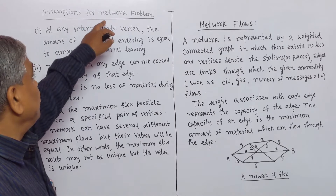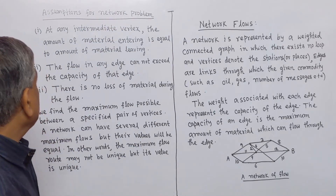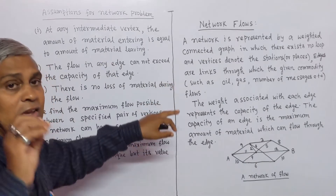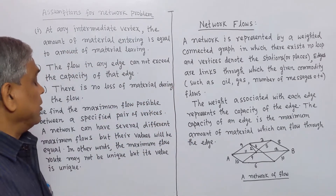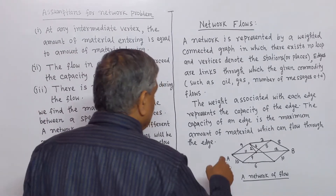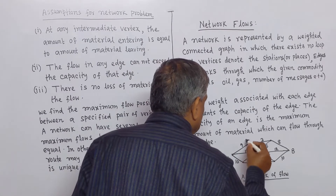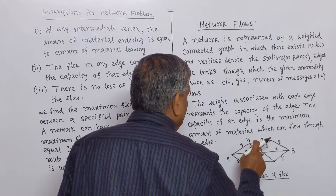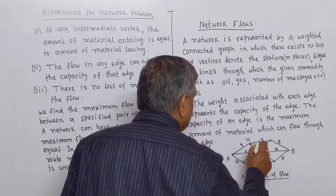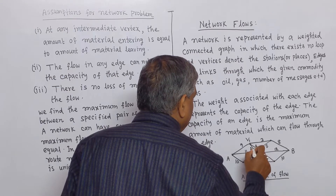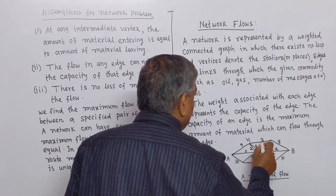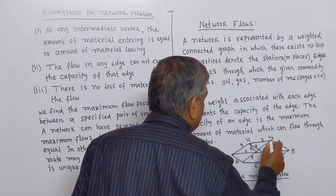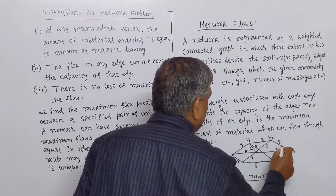We have some assumptions for network problems. Number 1: At any intermediate vertex, the amount of material entering is equal to the amount of material leaving. For example, at vertex V1, 9 units enter and 3 plus 4 plus 2 equals 9 units leave. At vertex V2, 3 plus 5 equals 8 units enter and 8 units leave.